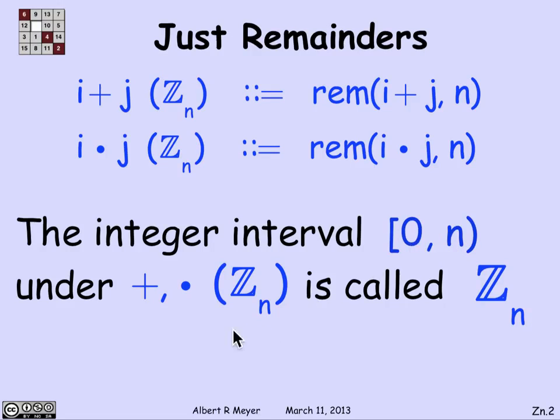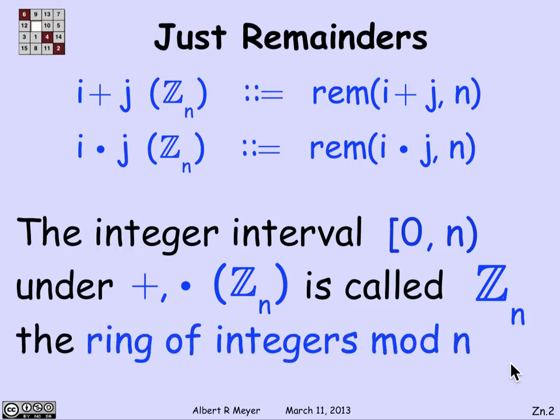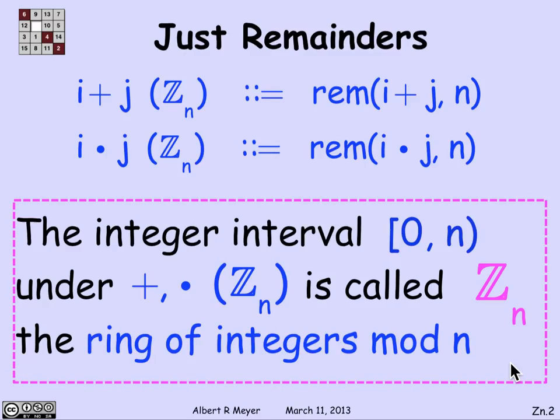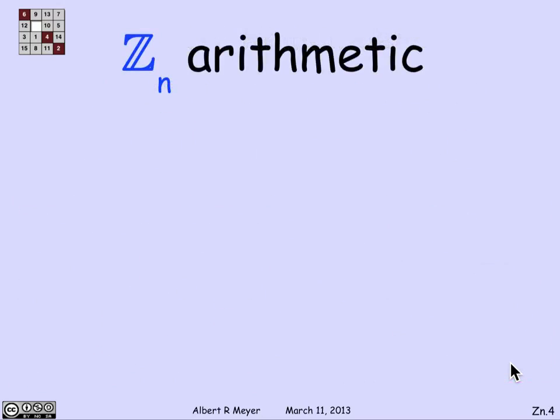So this includes 0 and doesn't include n. The integers in that interval under the operations of plus and times modulo Z_n as defined here is called the ring of integers Z_n. So it's got two operations and a bunch of things that are operated on. That's what Z_n is, the ring of integers mod n or modulo n.